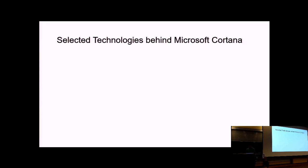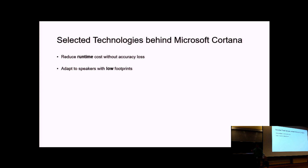In this talk I will briefly introduce some select technology behind Microsoft Cortana. What we really care about first is recognition accuracy. In addition to accuracy, when we deploy products, another important concern is runtime cost — we want to reduce runtime cost without losing any accuracy. The second topic is speaker personalization: with millions of users, how can we develop speaker-adapted models for every user with low footprint? The third topic is invariance modeling for the time-frequency speech signal.